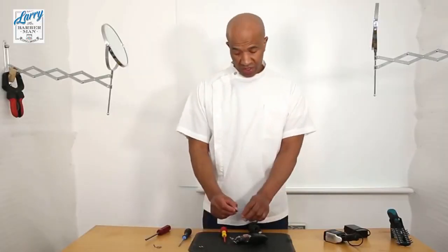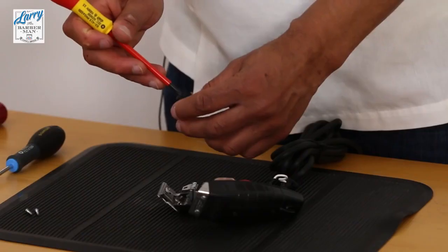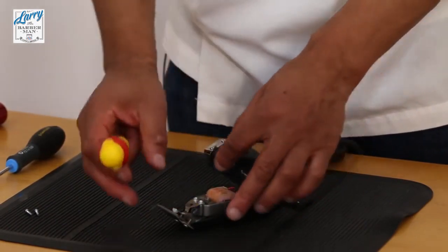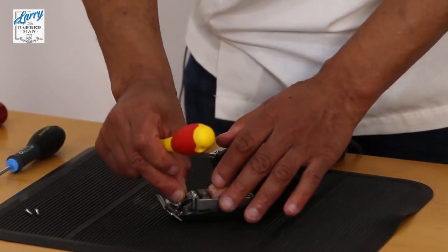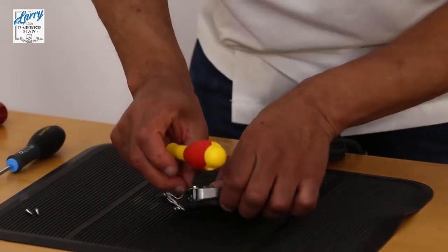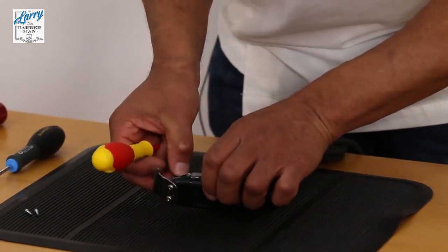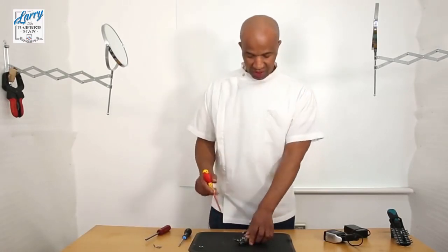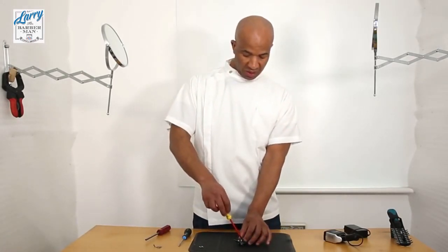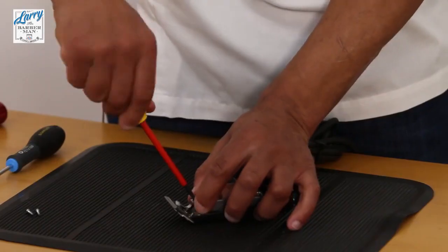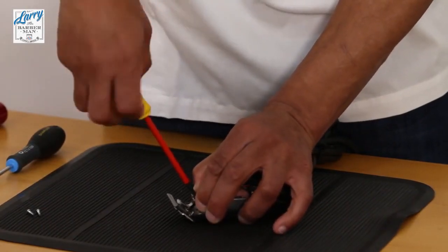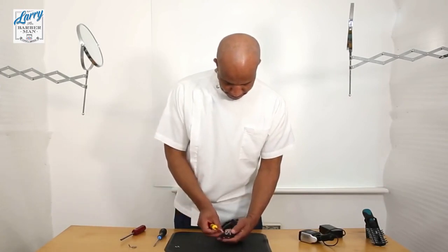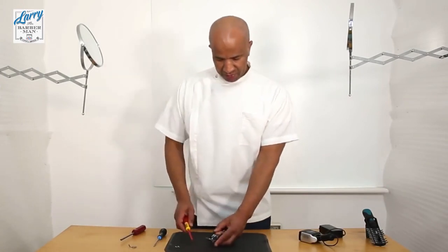Now that is secure we are going to reinsert the tension screw. This is the tension screw here. Look through the spring to find out exactly where the hole is. Make sure that is guided in properly. Once it is guided in properly use your Phillips screwdriver. Okay, so we have got the screw in.